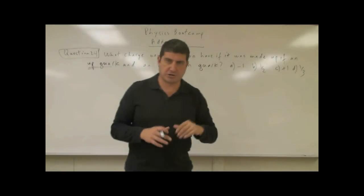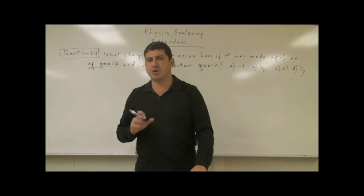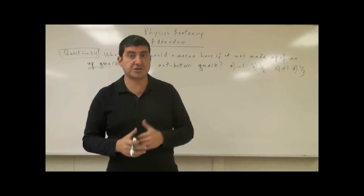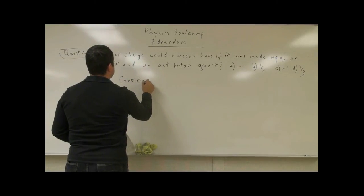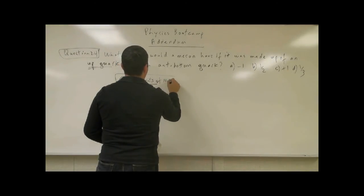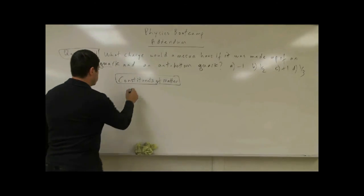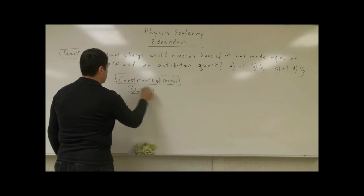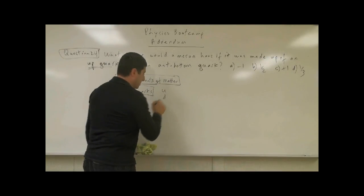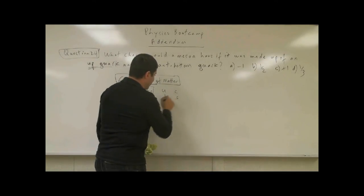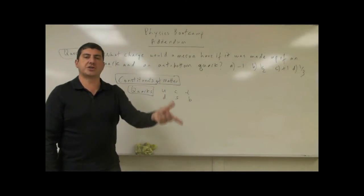Usually, when you do elementary particle physics, it helps to have little tables and stuff to visualize what's going on. It turns out in particle physics that we have what is known as particles that constitute matter — we call those the constituents of matter — and all those are made up of quarks. We have basically six different kinds of quarks: an up quark, a down quark, a charm quark, a strange quark, a top quark, and a bottom quark. And of course, there are the anti-particles of all of these.